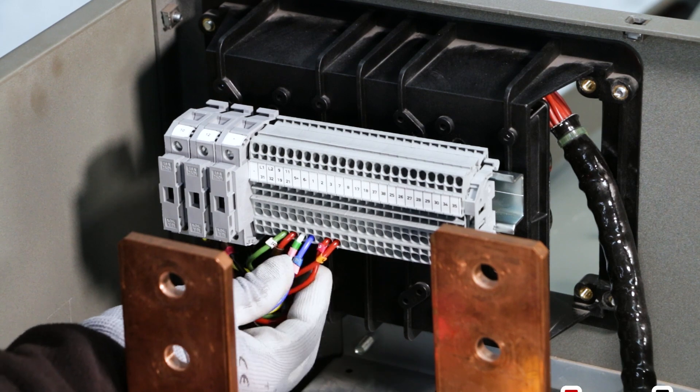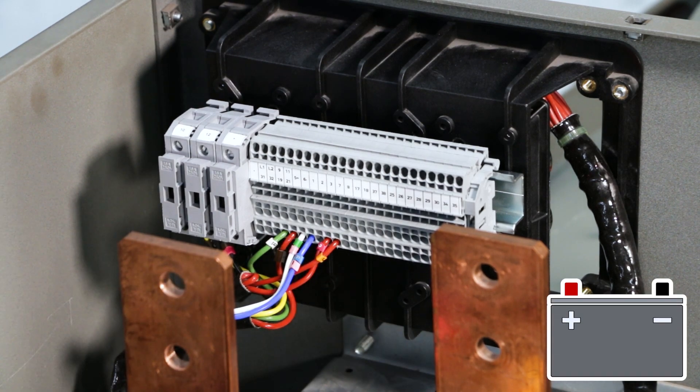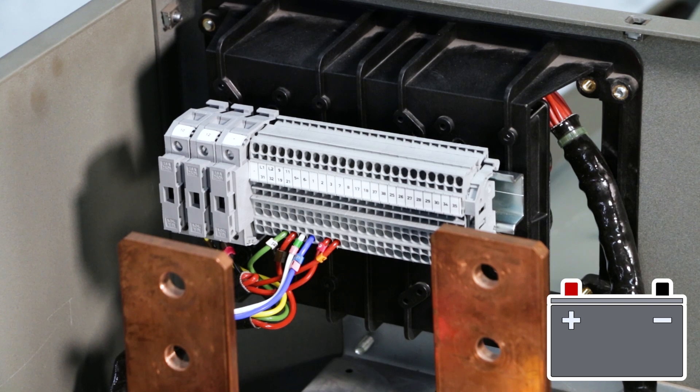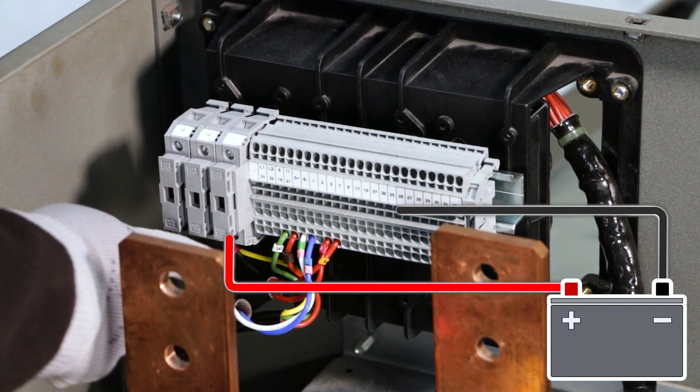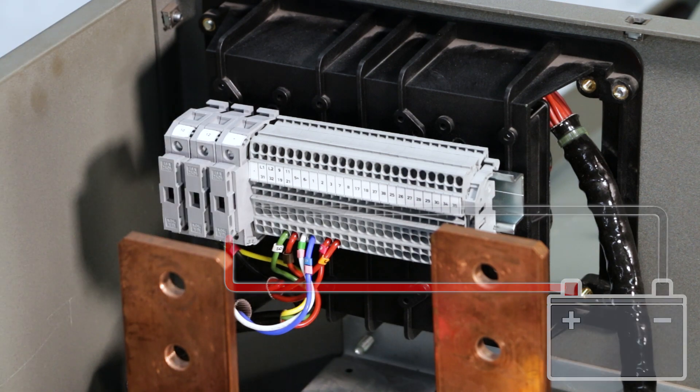To operate, the D550 requires an auxiliary 12-24 volts power supply not included in our supply. This power supply must be installed between the plus and minus terminals of the terminal block on the alternator side.